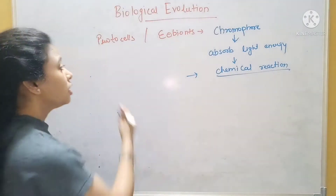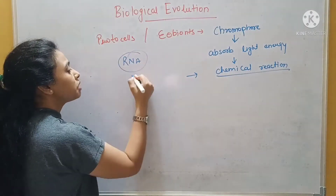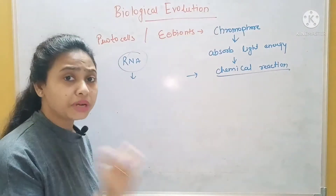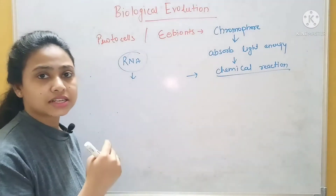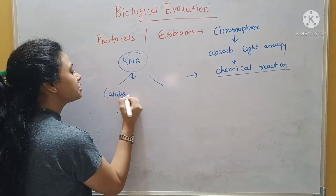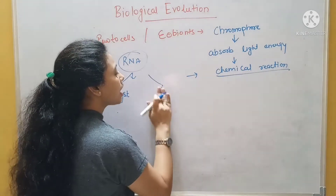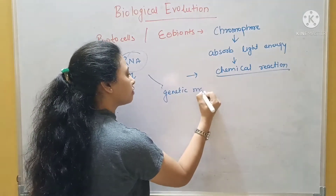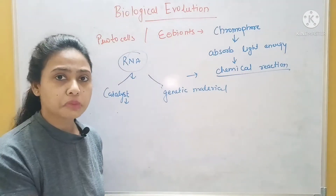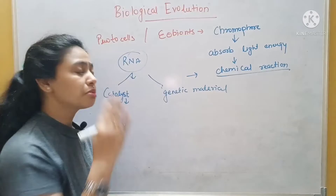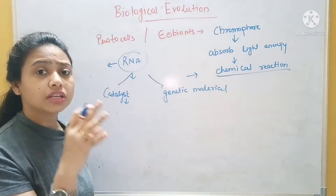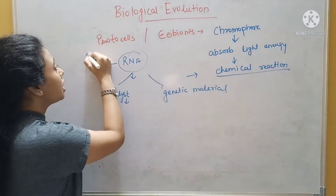Later on, it was found that RNA was able to do chemical reactions, certain metabolism, and could synthesize protein and perform replication. So there were two main things: RNA was acting as a catalyst, and it was also acting as a genetic material — taking part in metabolism and doing replications.